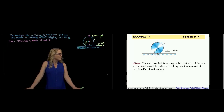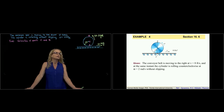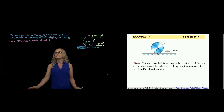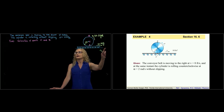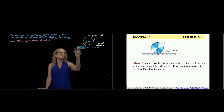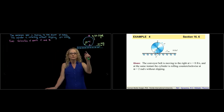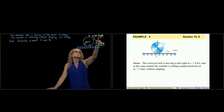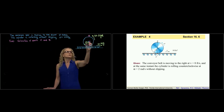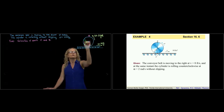This is example number 4 of section 16.6. We are talking about rolling without slipping, and we will also use the concept of instantaneous center of rotation. We have a conveyor belt moving to the right at 8 feet per second, with a cylinder on top rotating counterclockwise at 2 radians per second. We are asked to find the velocity of the center of the disc and the velocity of point B.